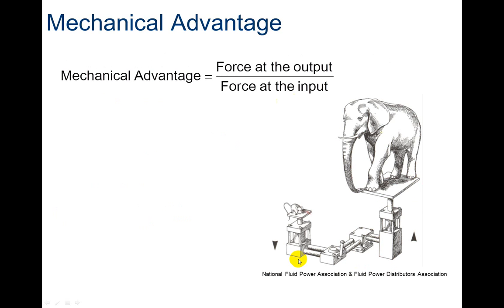Mechanical advantage equals force at the output divided by force at the input. We've done this with simple machines, and now we're looking at it with hydraulics. This mechanical advantage would be the theoretical or ideal mechanical advantage — MA equals force out over force in.